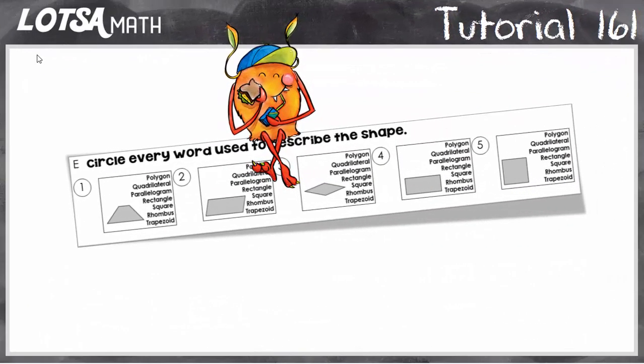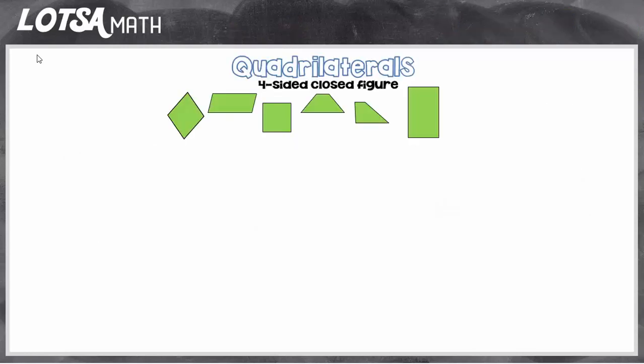For these questions we are going to classify different shapes. Specifically we're going to be classifying quadrilaterals. Quadrilaterals are just any shape that's closed and has four sides, but we can narrow down quadrilaterals and name them more specifically.